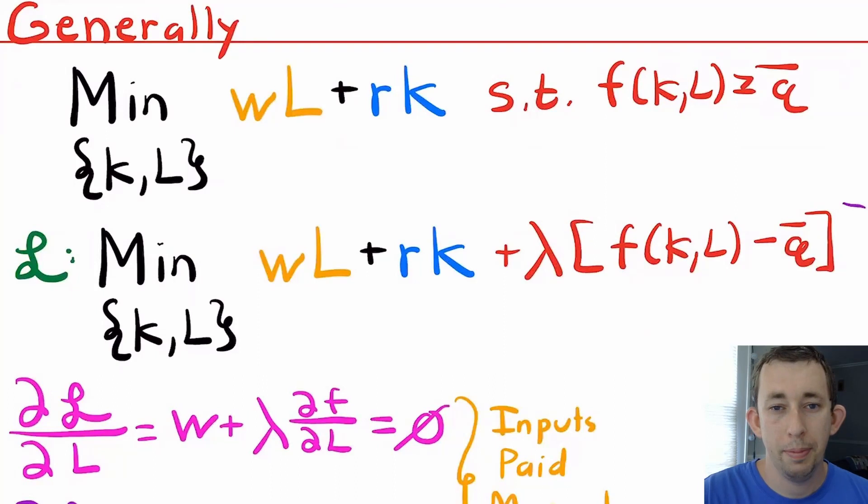Generally, when we're setting up a cost minimization problem, we're trying to minimize costs. You have two general types of costs: you're going to pay your workers and you're going to pay for your machines. You pay them a wage times the number of workers, and for capital the rental rate times the number of machines. You are trying to do that such that you produce a certain number of stuff. So our constraint here is that your production function needs to crank out at least q bar number of units. So I can go ahead and turn that into a Lagrangian.